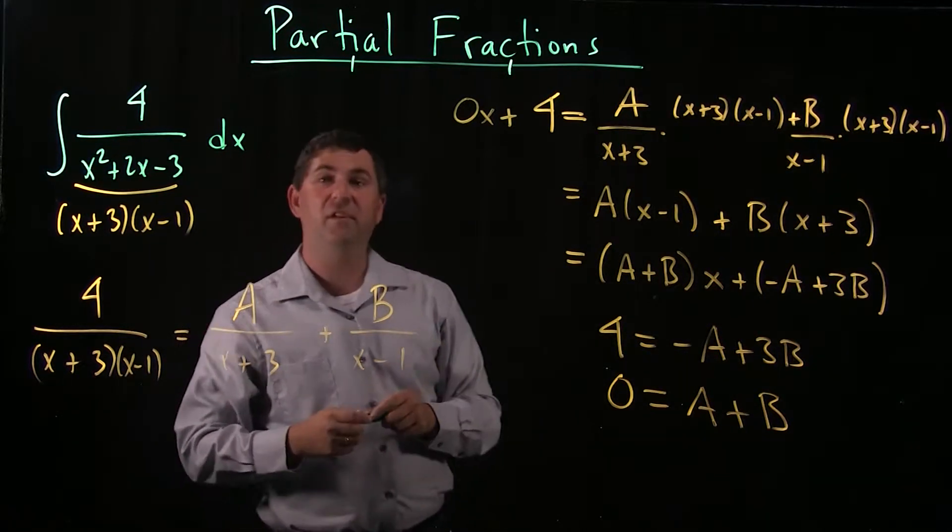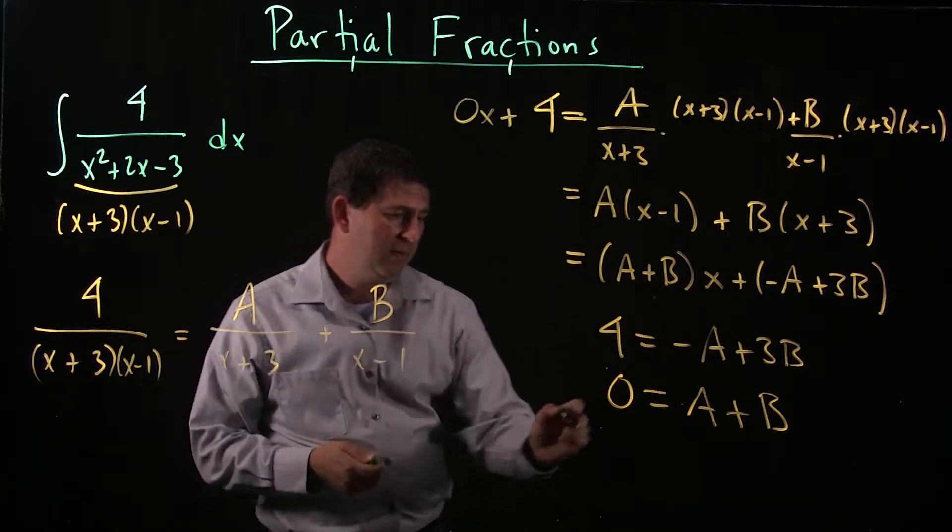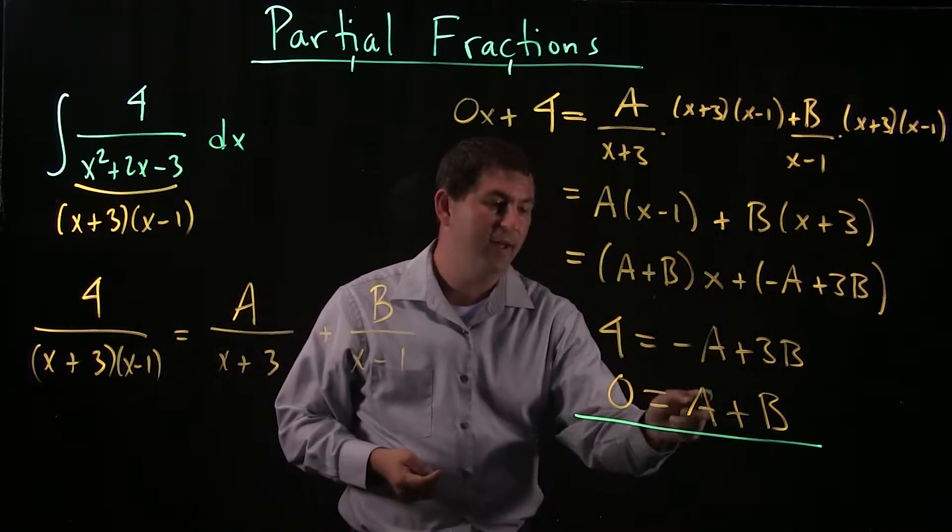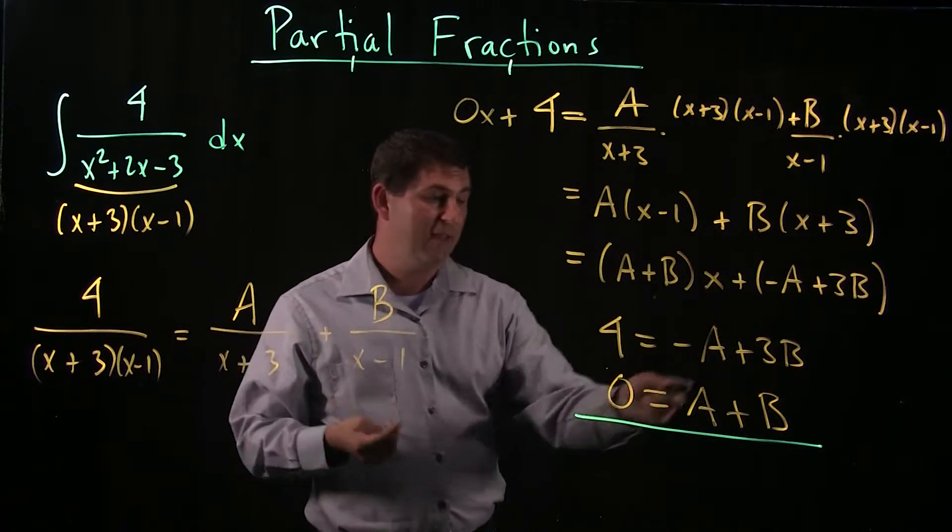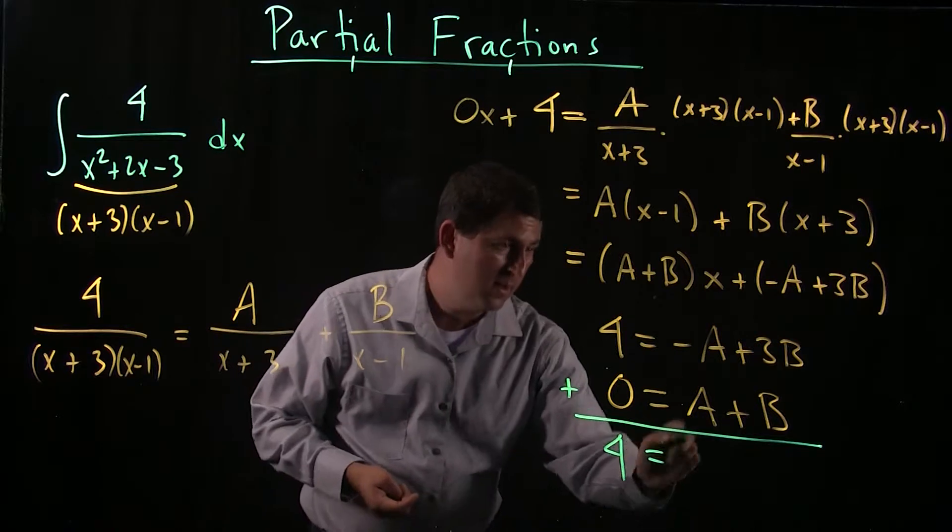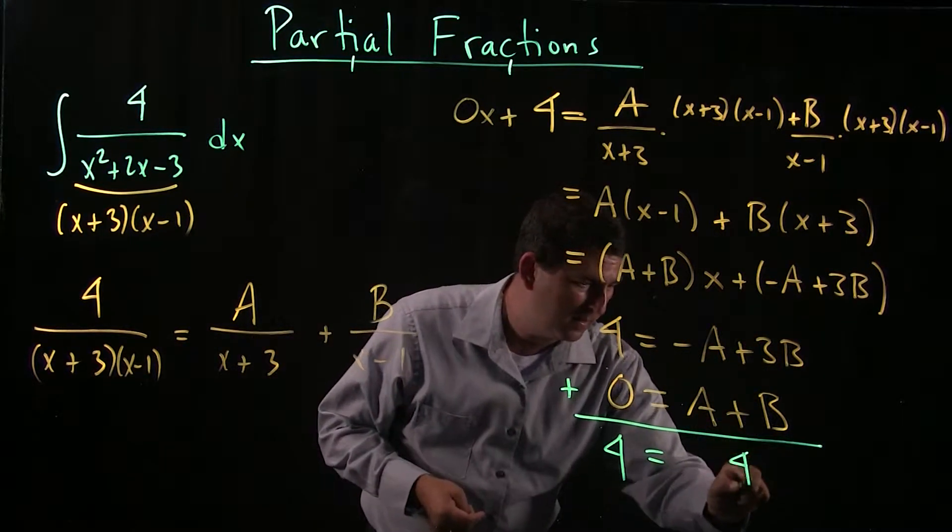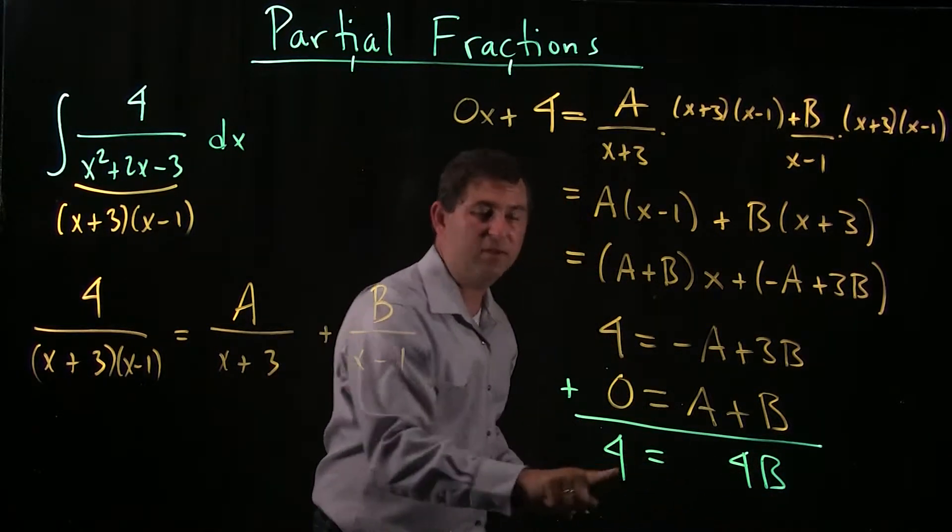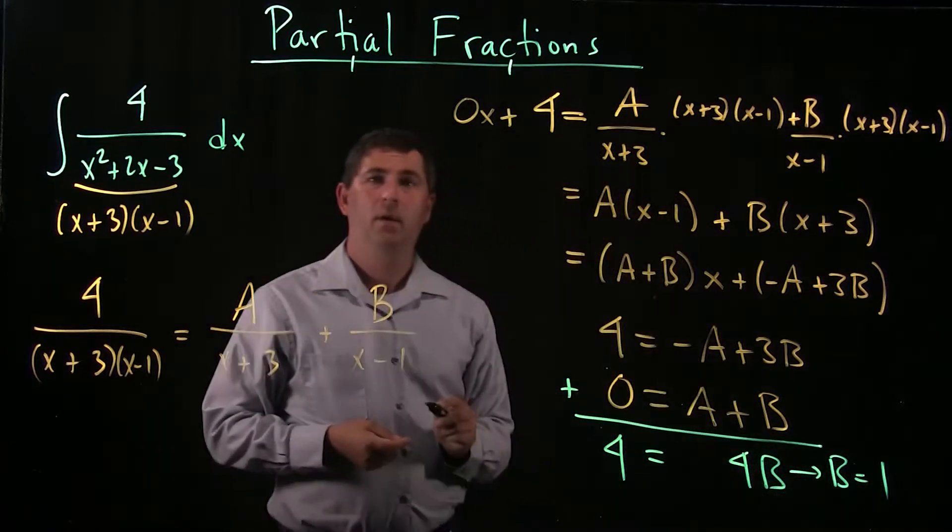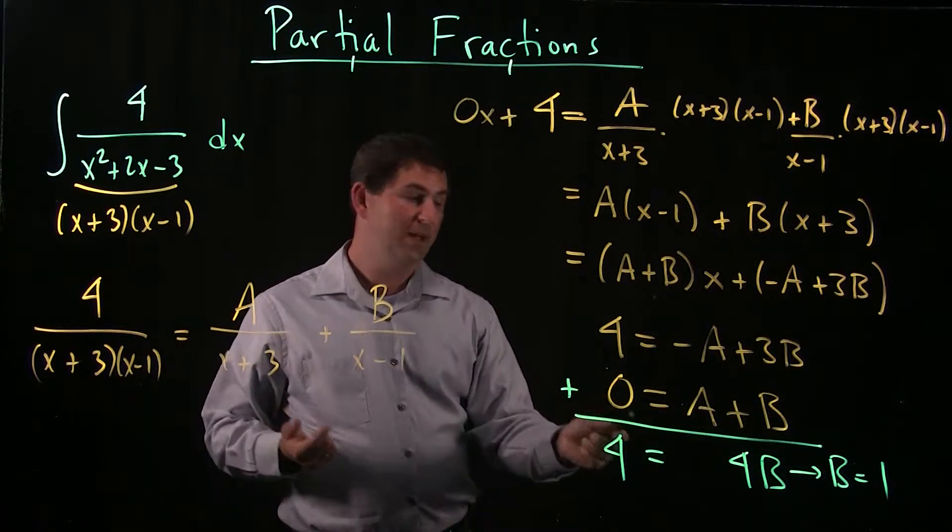Okay, so this gives me a system of two equations with two unknowns. And I'd like to solve this system. This is not going to be so bad here. I'm going to add these together. Why am I adding? Because I notice I have negative a and positive a. If I add those together, the a's go away. So adding, I get 4 plus 0 is 4. Negative a plus a is 0. And 3b plus b is 4b. And so 4 times b is 4. So b has to be 1. Okay, once I know b is 1, and I know that a and b add up to 0, a has to be negative 1.